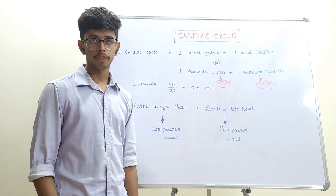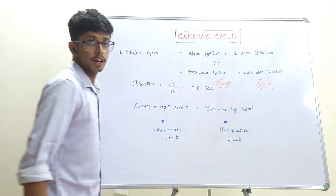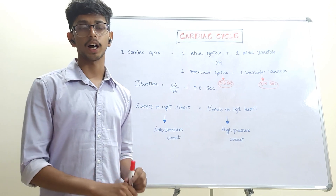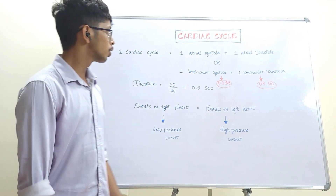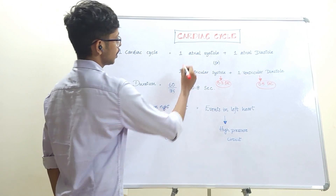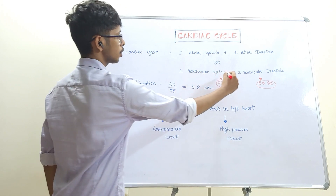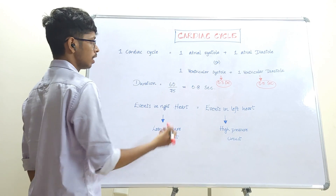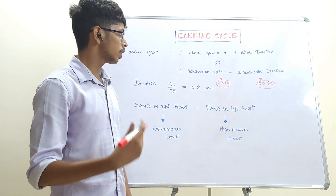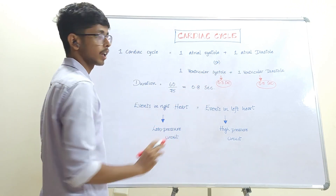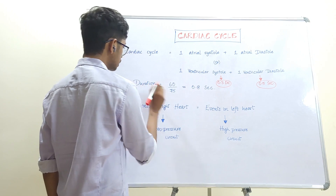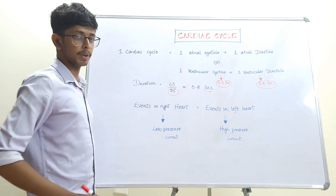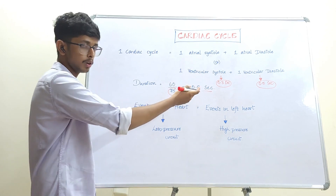The first topic of discussion today is the cardiac cycle. The textbook definition is: it is the series of electrical and mechanical events occurring in the heart in a single heartbeat. One cardiac cycle constitutes one atrial systole plus diastole, or ventricular systole plus diastole. When only systole or diastole is mentioned, it refers to ventricular systole and ventricular diastole. The duration of each cardiac cycle is 0.8 seconds, considering a normal heart rate of 75 beats per minute — 60 divided by 75 equals 0.8 seconds.